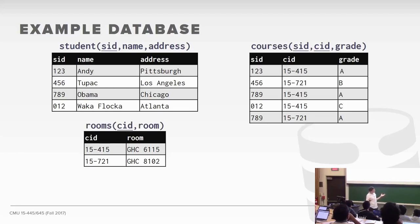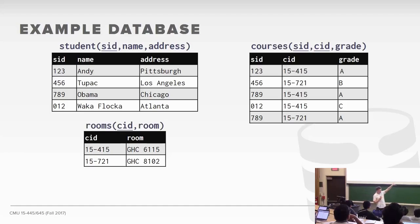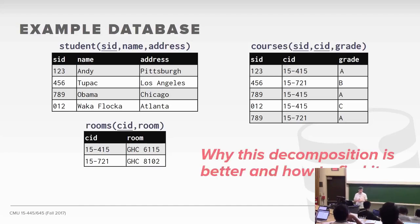Ideally, we want to decompose that giant single relation into sub-relations linked together by the student ID. This provides independence to avoid all those anomalies: we can insert students without them being registered in a course, add a course with a room number even with no students enrolled, and we don't have duplicate information. We only have Obama once; if we update his address, we only update a single tuple. The goal of this lecture is to understand at a more fundamental level why this decomposition is better.